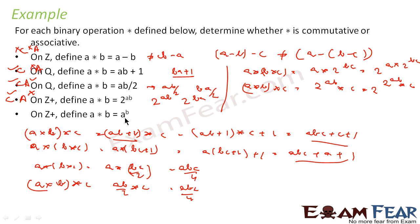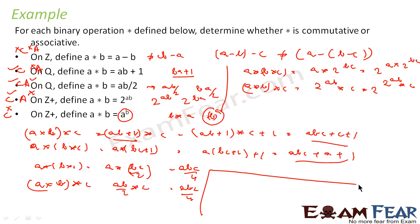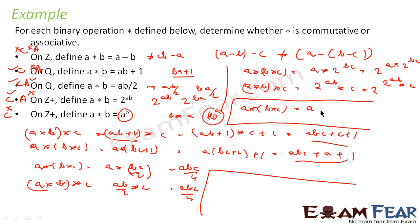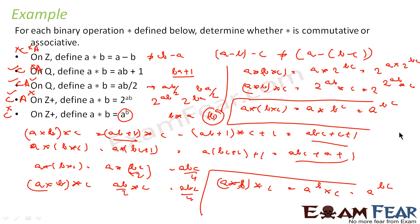For the last one, a * b = a^b on Z+. Here a * b = a^b and b * a = b^a, and a^b ≠ b^a in general, so it is not commutative. For associativity: a * (b * c) = a * b^c = a^(b^c). And (a * b) * c = a^b * c = (a^b)^c = a^(bc). Since a^(b^c) ≠ a^(bc) in general, it is not associative either.